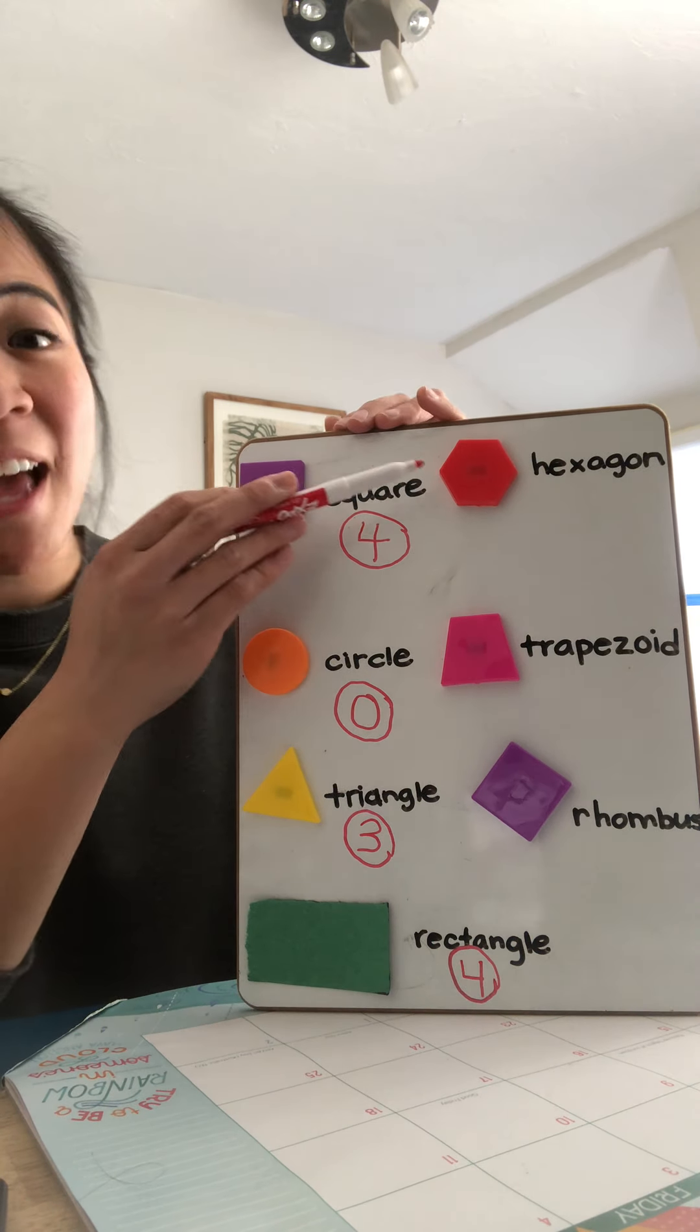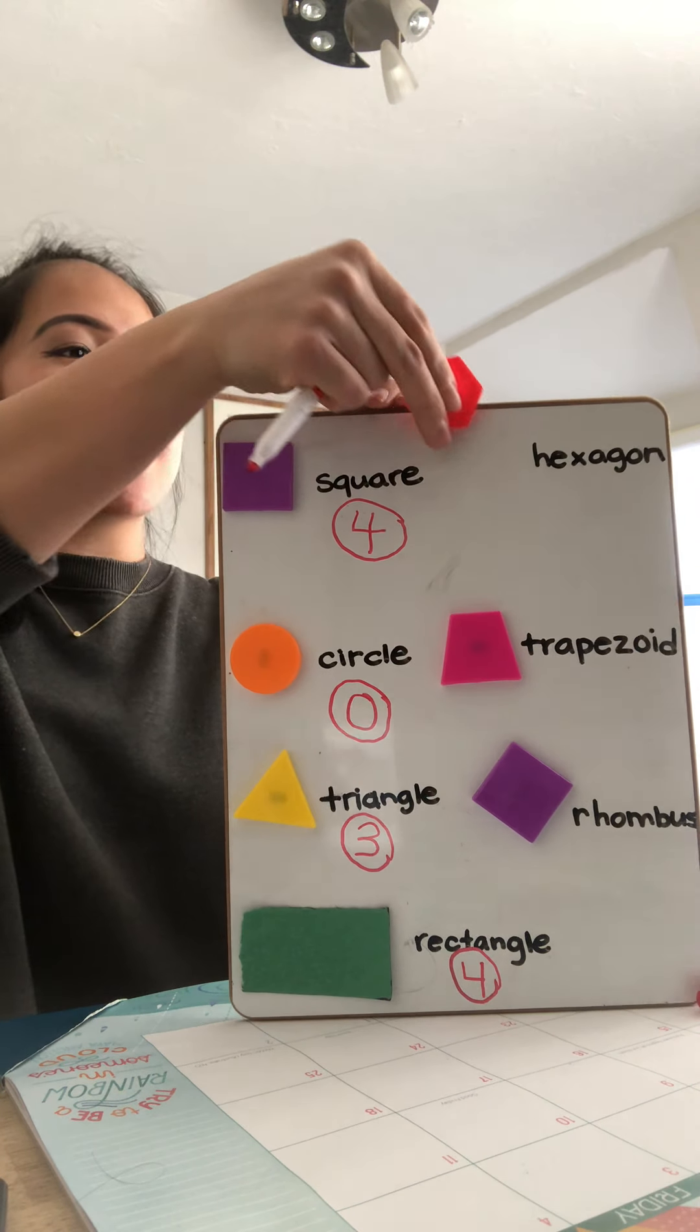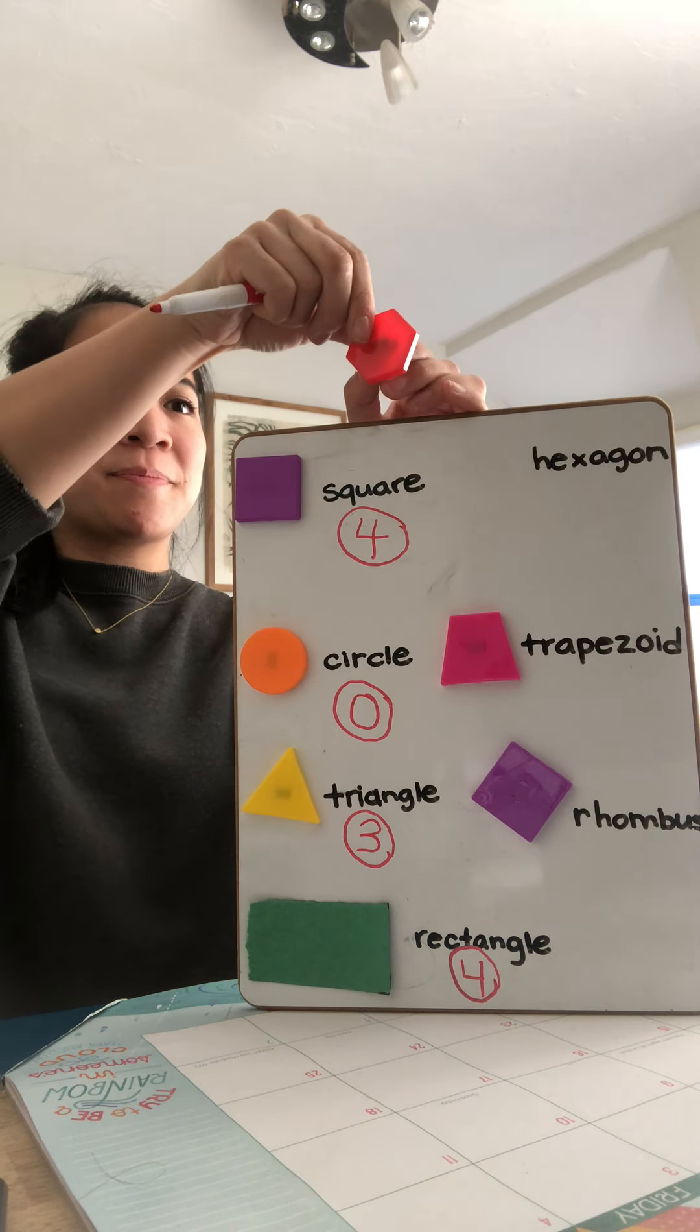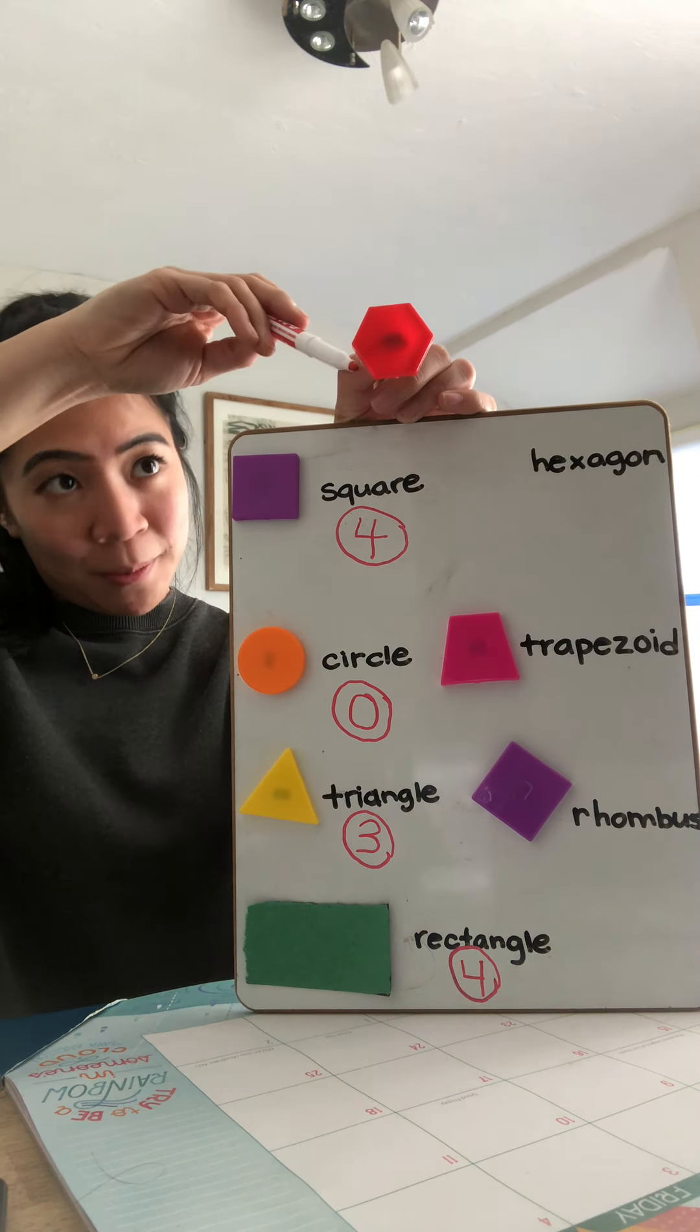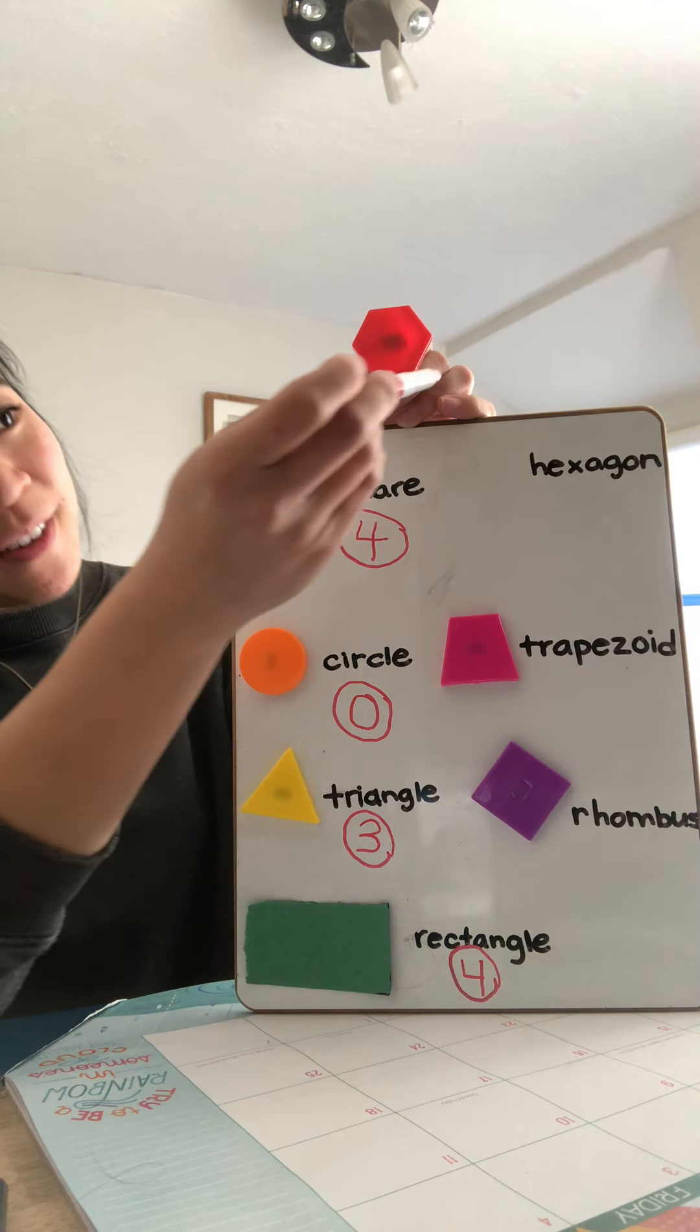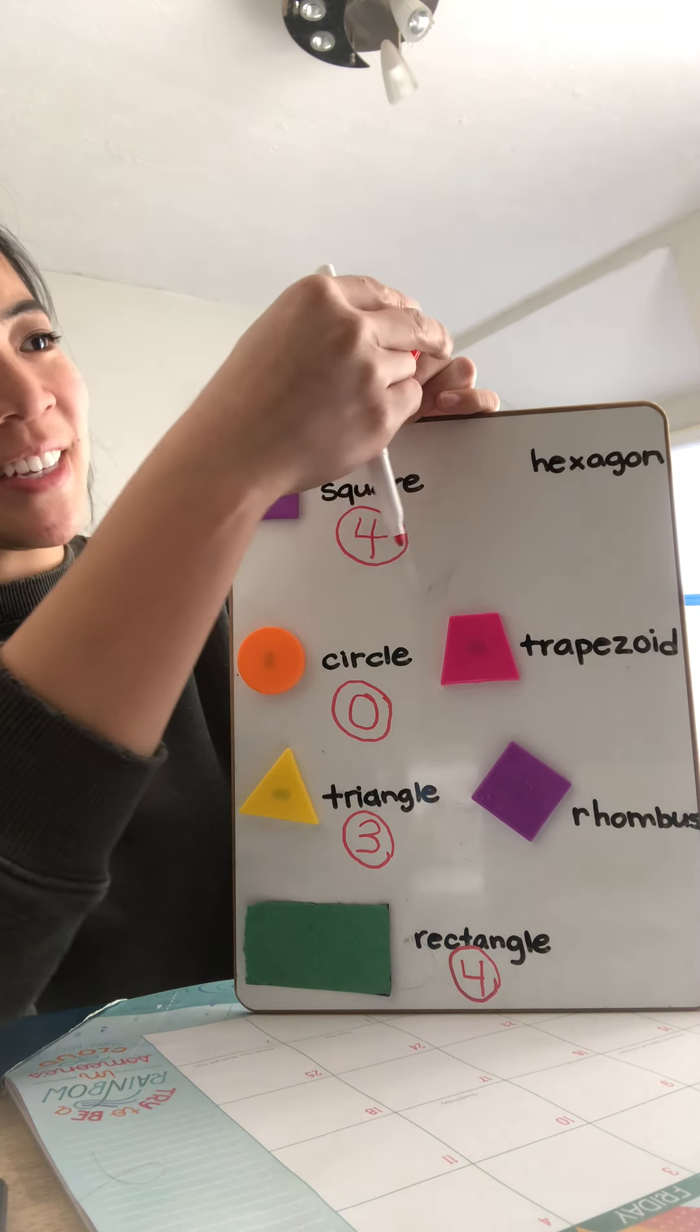Okay. Let's move up to the hexagon. Hexagon. Let's count how many sides a hexagon has. Ready? One, two, three, four, five, six. Six sides to a hexagon.